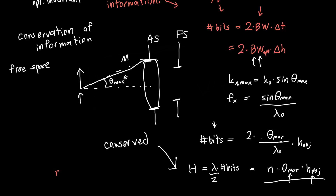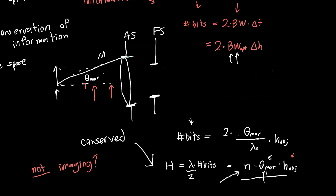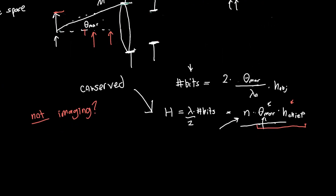A natural question is: what if we're not in imaging condition, or what if we want to evaluate the Lagrange invariant at some other point in the system? It appears it's not conserved because while the marginal ray angle stays the same, the object height is doing something unclear. So rather than the height of our object, we'll use the height of the chief ray passing through the system — because if the object subtends our entire field of view, the height of the chief ray at the object should equal the height of the object. The question is how to turn this into a conserved quantity.